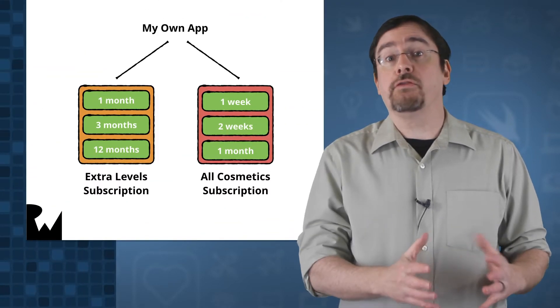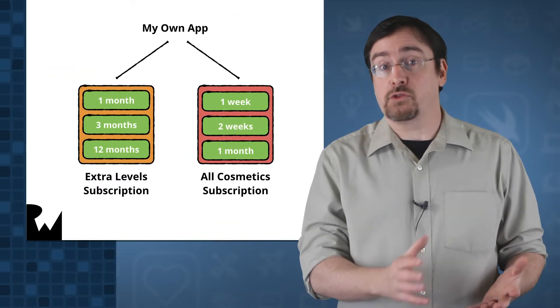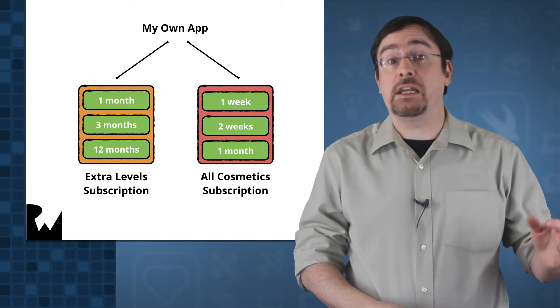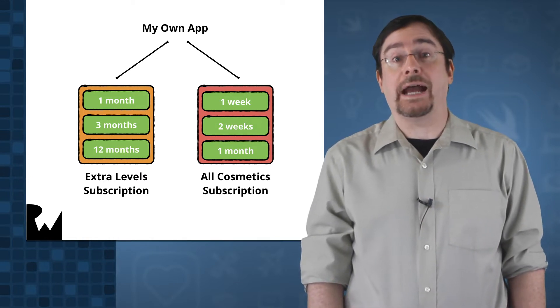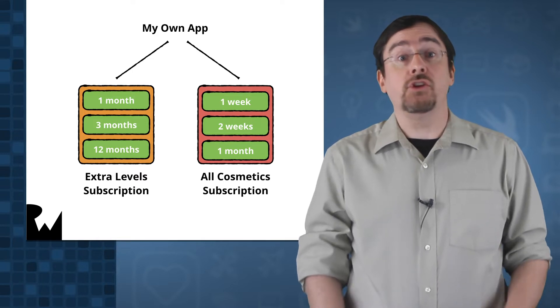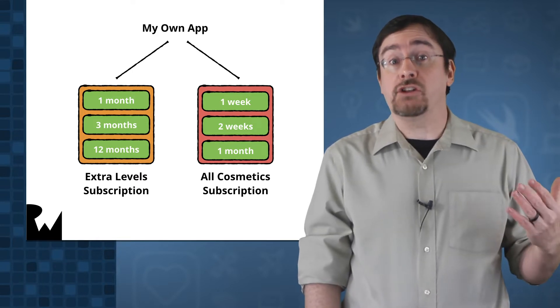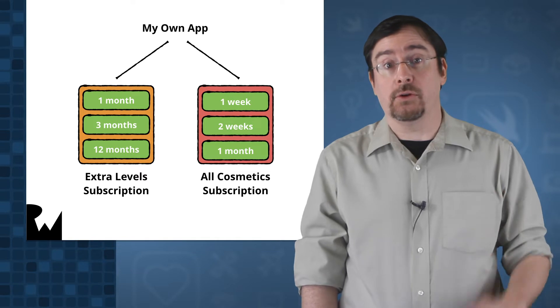An auto-renewable subscription is pretty much the same as a non-renewing one, with a few differences. First, you must create a subscription group. A group is a way for you to manage all your various subscriptions. You can add as many subscriptions to that group, but only one of those can be active at a time. You can also have one free trial per group. More about those in just a moment.